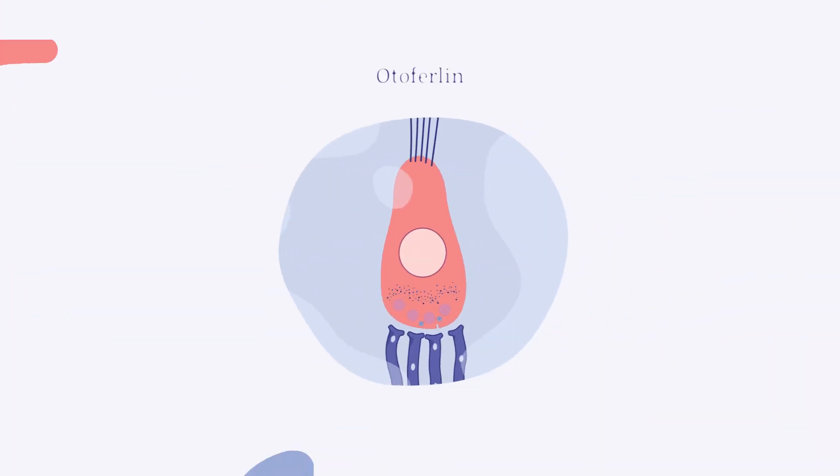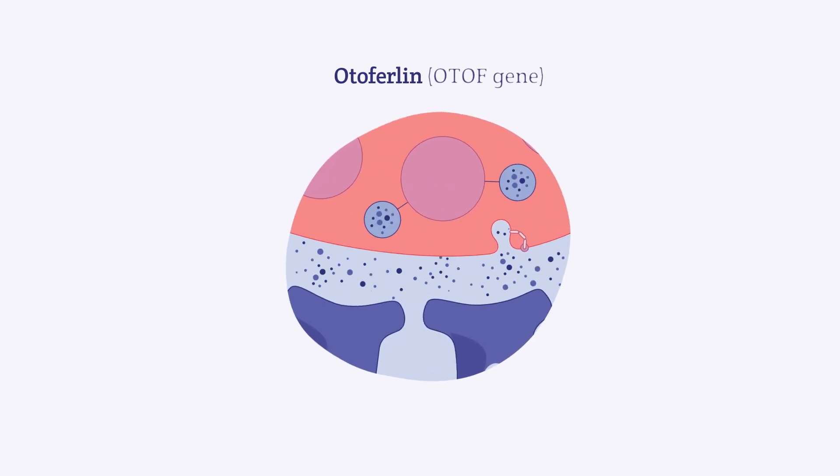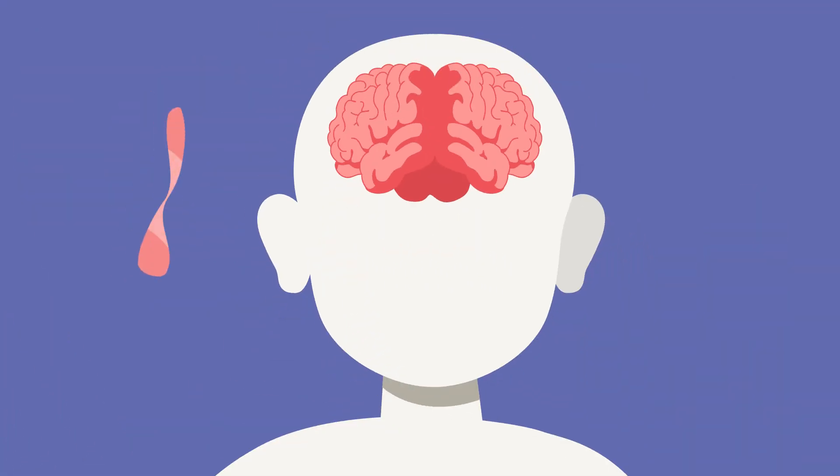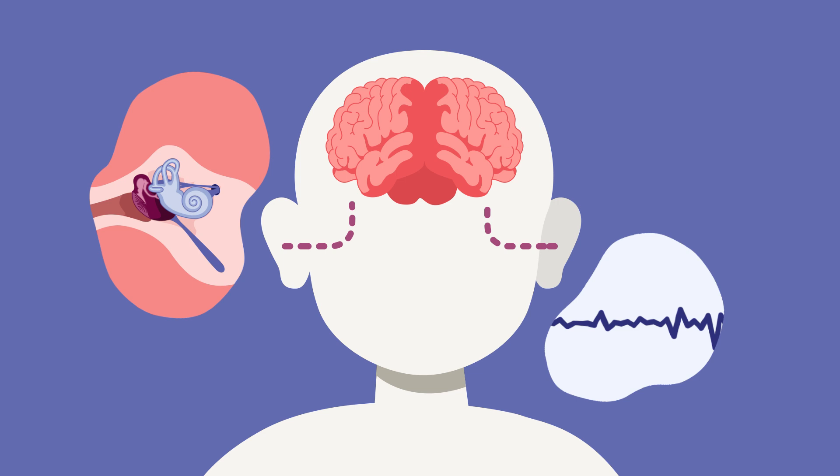An example of a gene therapy approach being studied for hearing loss seeks to correct a non-working Otoferlin gene, or OTOF gene for short. This gene produces Otoferlin protein, which is key for sounds to be transmitted from the ear to the brain.